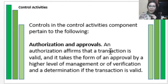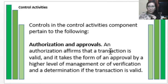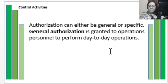Authorization takes the form of approval by a higher level of management, or verification and determination that a transaction is valid. Before a transaction can take place, it must be authorized by higher management — perhaps through a signature on a document or any written form of communication that permits the transaction to happen. Authorization can be either general or specific.